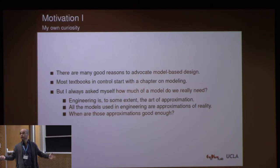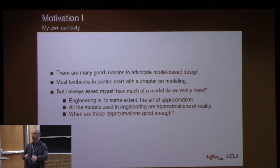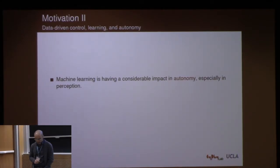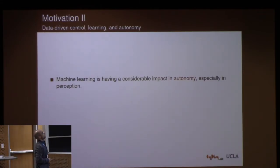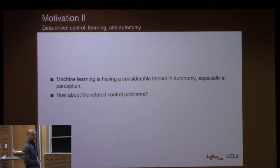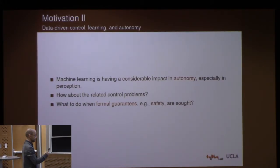Here I'll talk about controlling systems without models. I'm going to be perhaps a little bit too extreme, but the hope is that in doing this exercise it will shed some light into how much of a model you really need to control a system. Another reason for looking into these problems is autonomy. In the context of autonomy, machine learning is having a considerable impact, especially when you deal with sensors such as vision and LiDARs. But what happens when you want to give formal guarantees of performance or safety, and you want to have machine learning components in the loop?